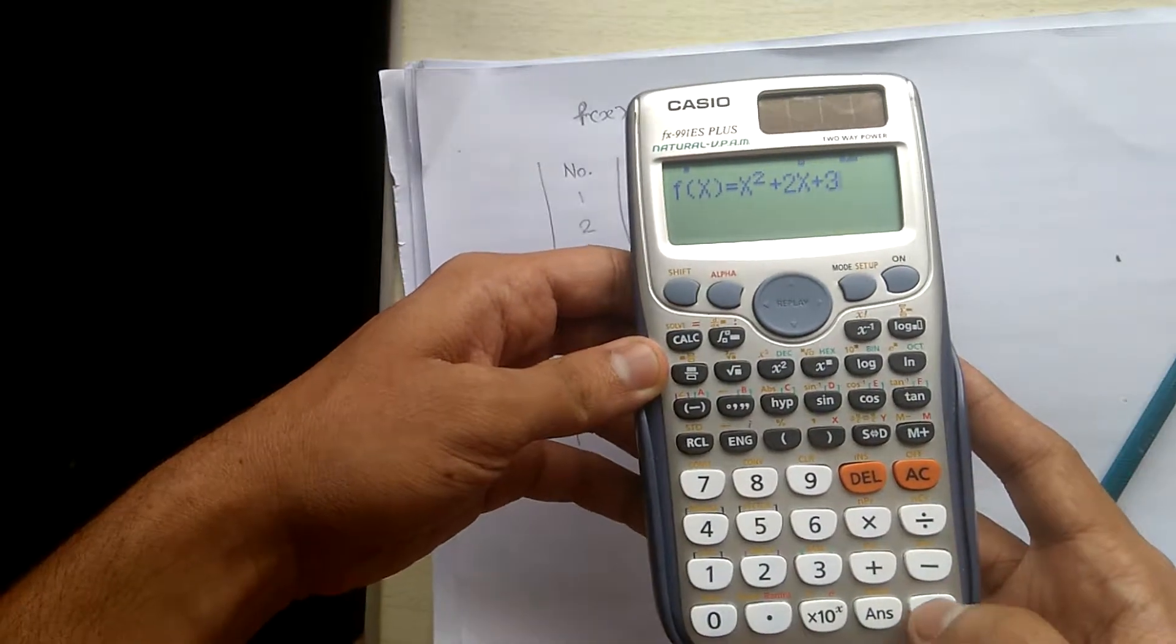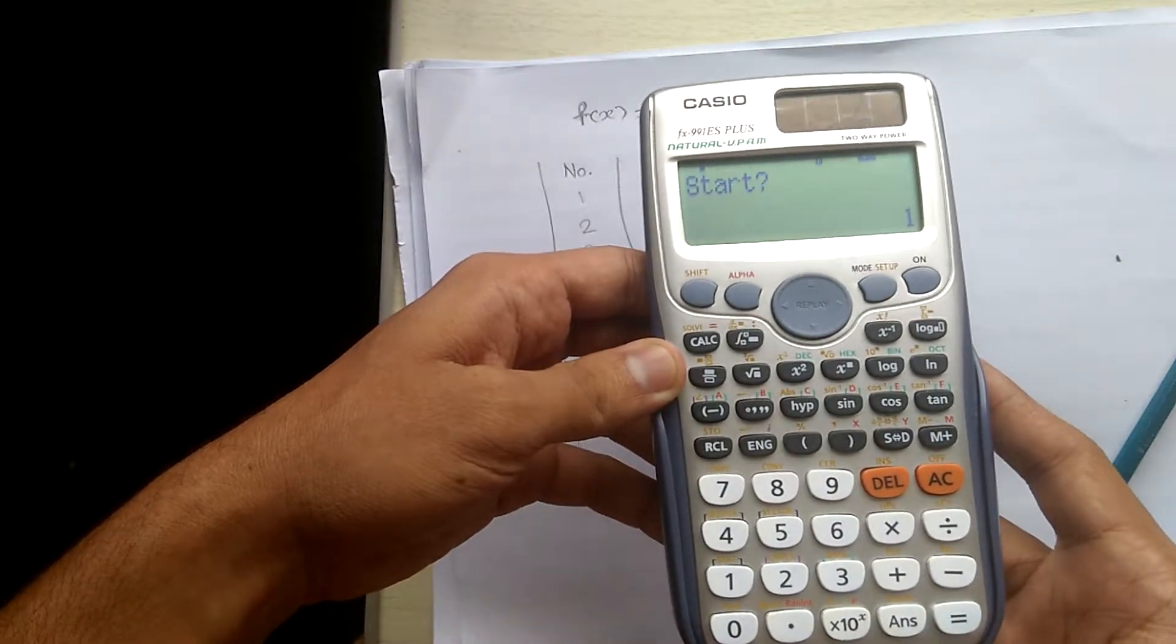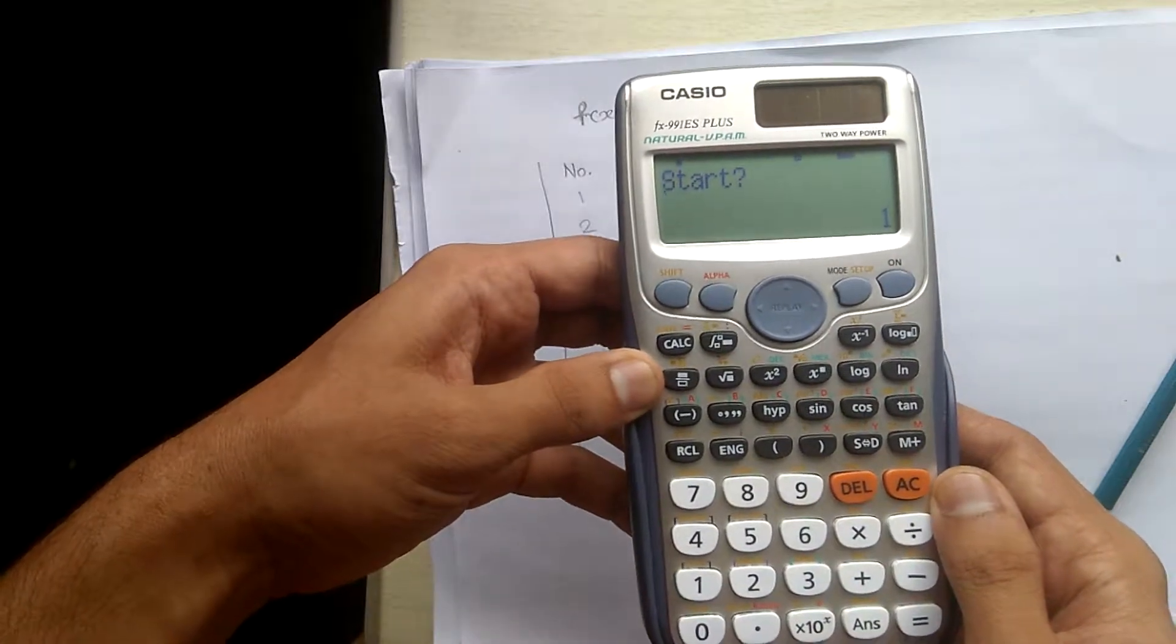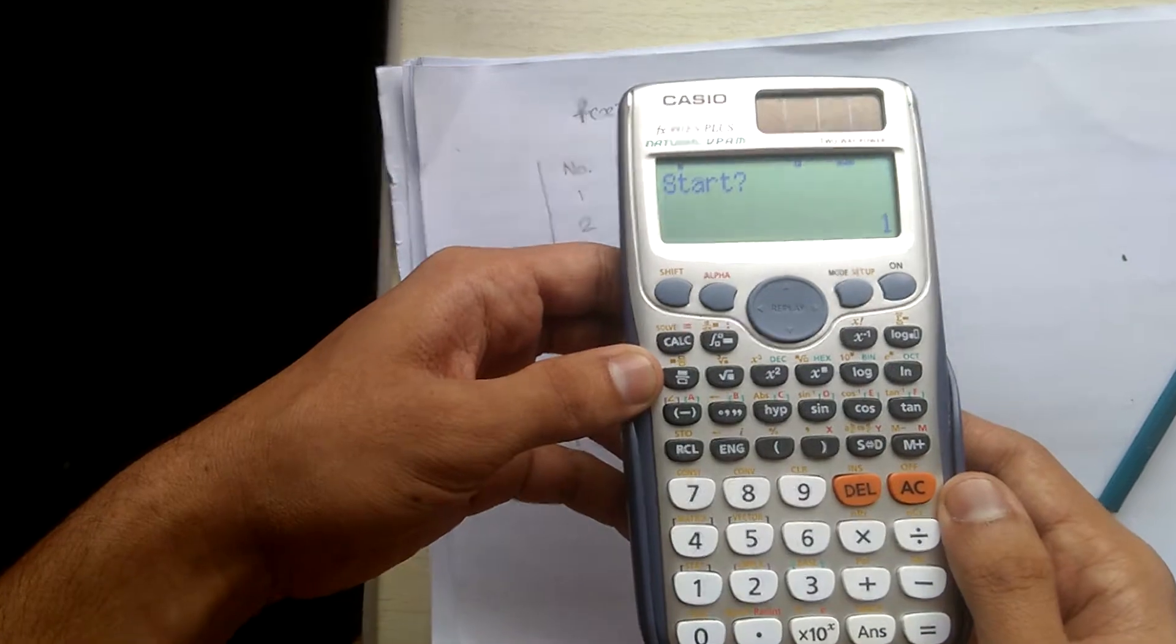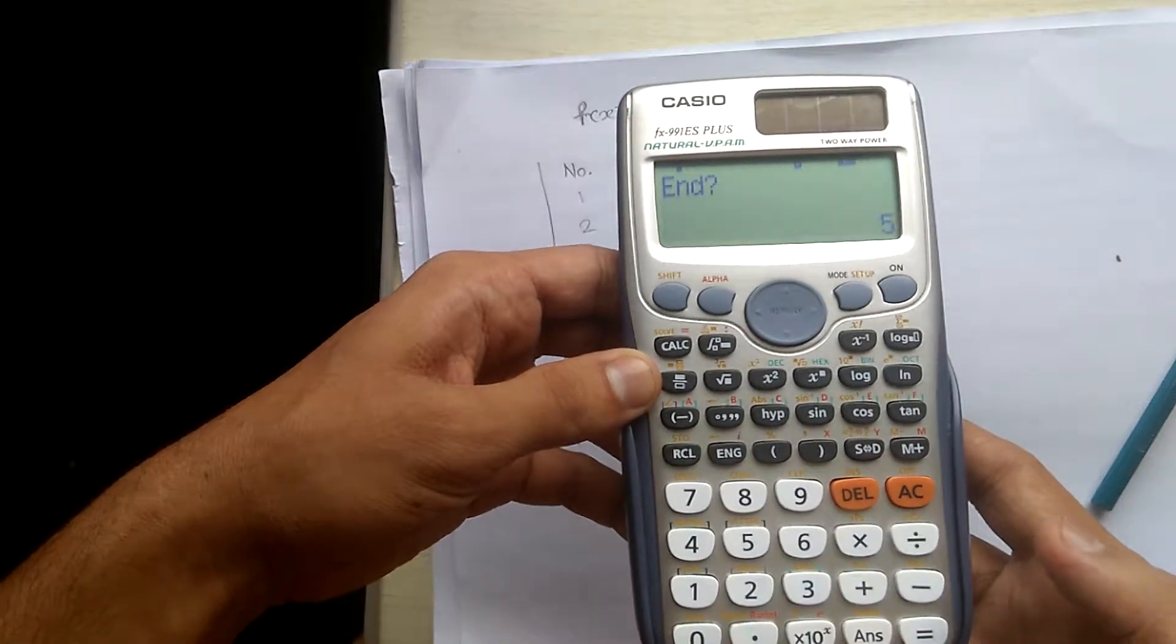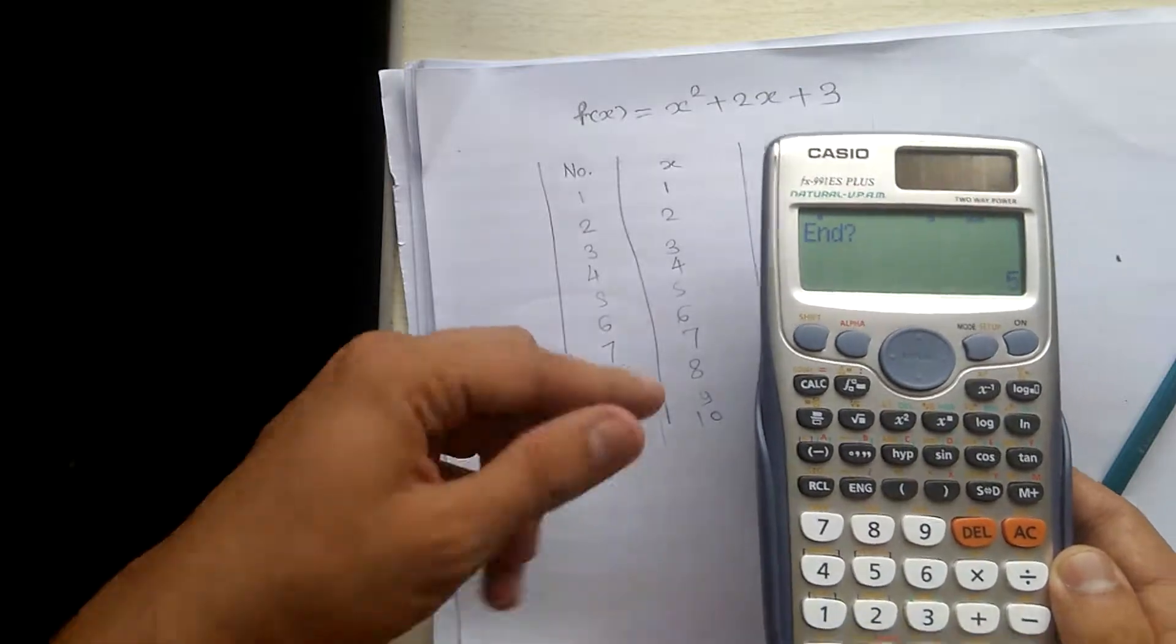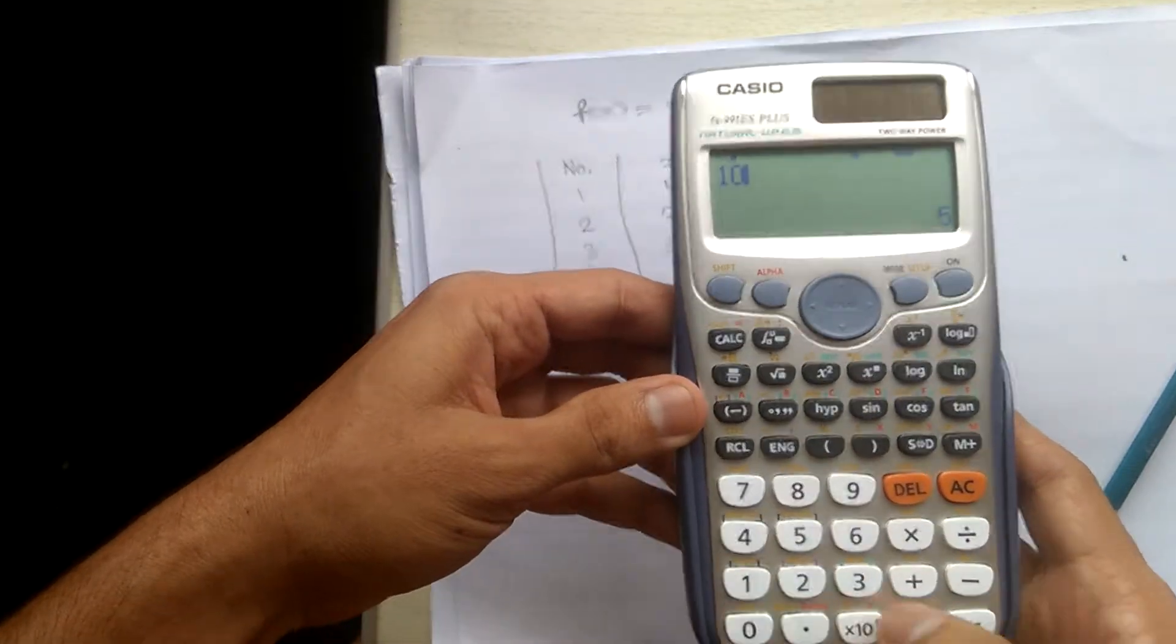Then press the equal button. It will ask you from which point you have to start. Start is 1, and the endpoint is given as 5, but I want it as 10. So I will put 10 and press equal.